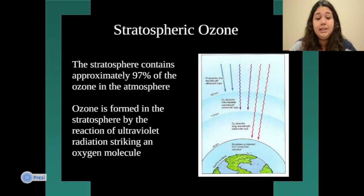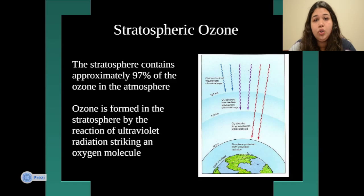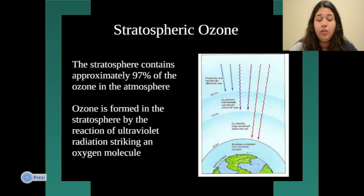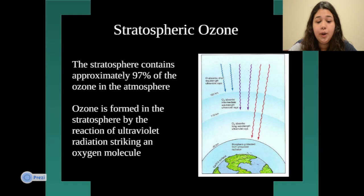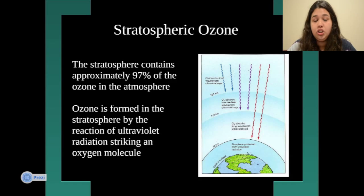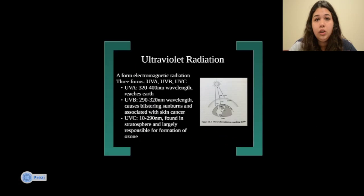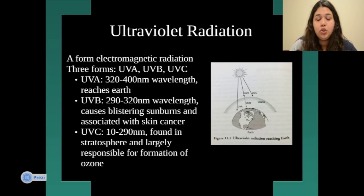The stratospheric ozone contains 97% of the ozone in the atmosphere. The ozone is what protects us from UV radiation and other harmful radiation that can hit the earth. Ozone is formed in the stratosphere by the reaction of UV radiation striking an oxygen molecule, and I have a picture showing how it's created.